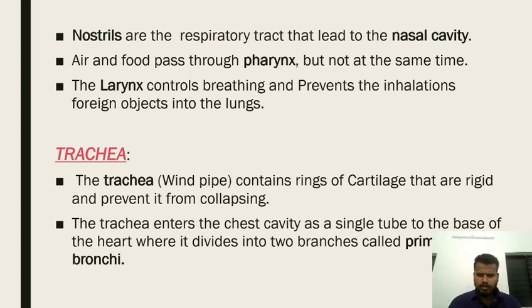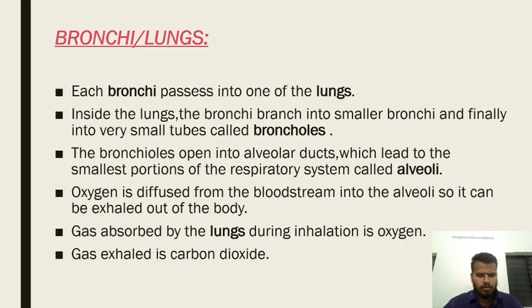The trachea contains rings of cartilage that are rigid and prevent it from collapsing. The trachea enters the chest cavity as a single tube to the base of the heart, where it divides into branches called the primary bronchi. Each bronchus passes into one of the lungs.